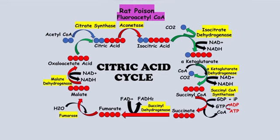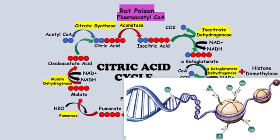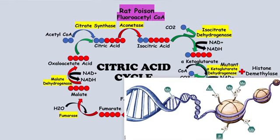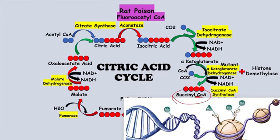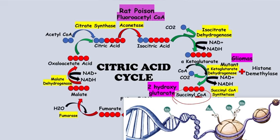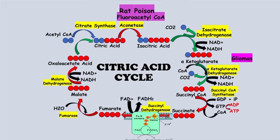Alpha-ketoglutarate dehydrogenase is an integral part of histone demethylase. Our DNA is wrapped around histone proteins and is methylated; the function of histone demethylase is to remove this methyl group from histone proteins. If there is a mutant form of this alpha-ketoglutarate dehydrogenase enzyme, it won't allow alpha-ketoglutarate to bind with histone demethylase, affecting gene expression. Also in the Krebs cycle, instead of succinyl CoA, 2-hydroxyglutarate will be formed, which leads to cancer of glial cells — glioma.